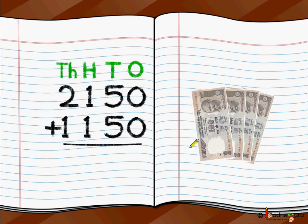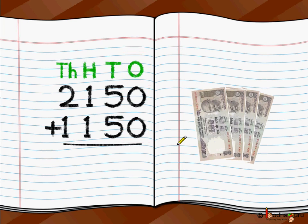It's very simple. It may look like a very big number, but all you need to do is single digit addition starting from the 1's place. So first add the single digits at the 1's place, then at the 10's place.